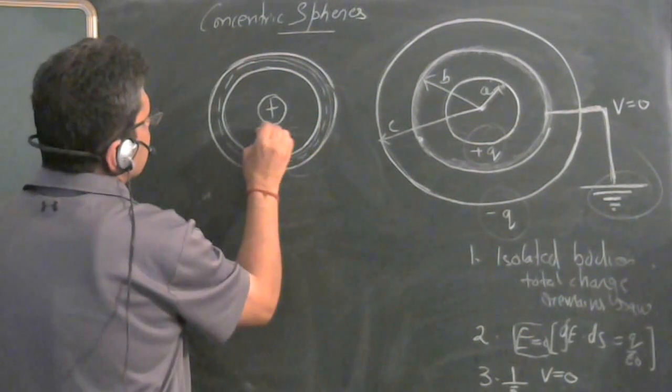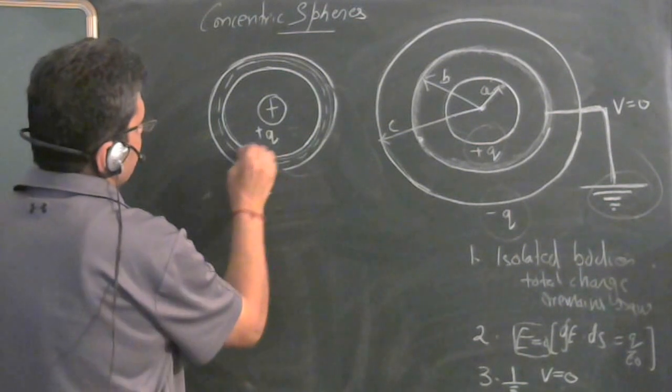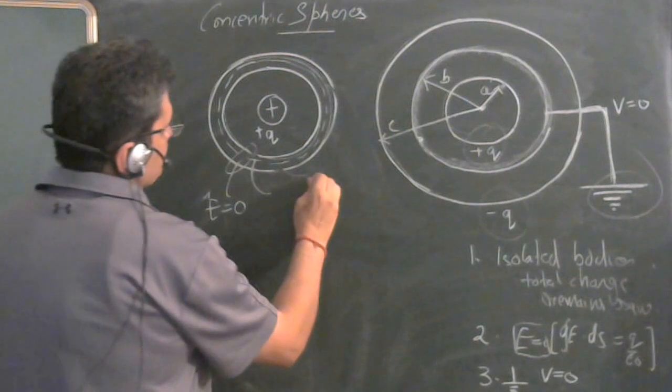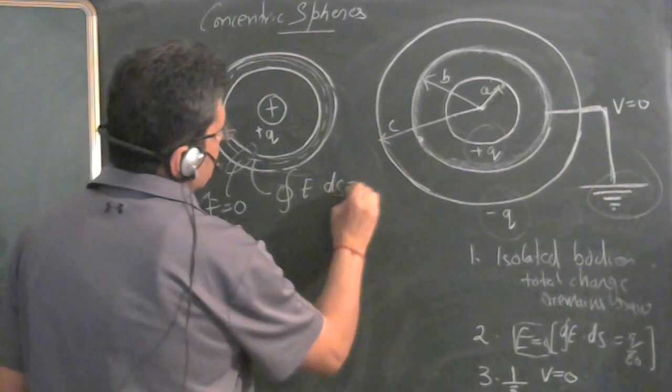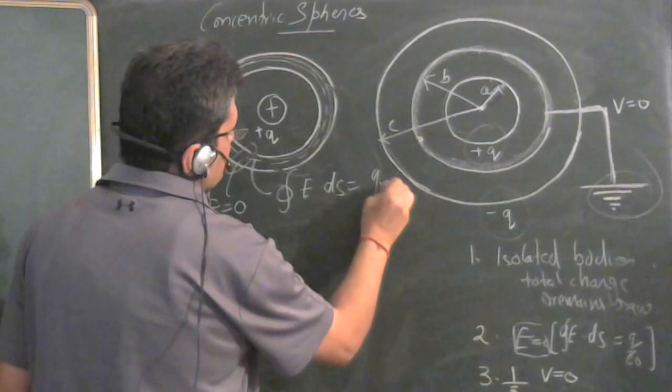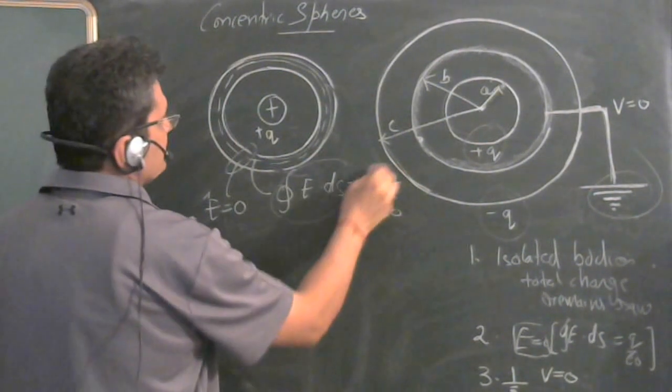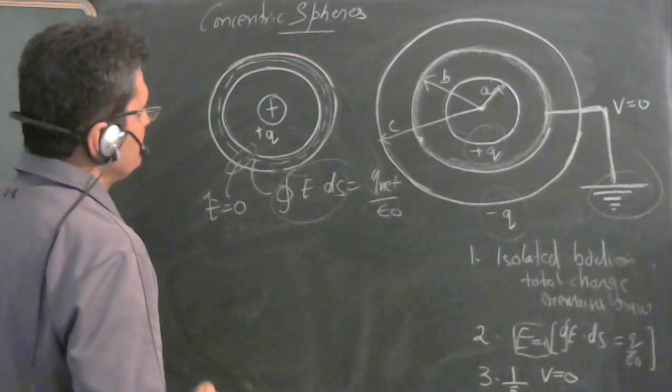There is a plus Q charge inside. This is the Gaussian surface and electric field here has to be zero because it is a conductor. So E dot DS is equal to Q net upon epsilon zero. Since this is zero, means Q net enclosed in this Gaussian surface has to be zero.